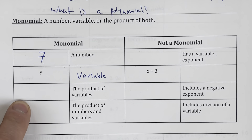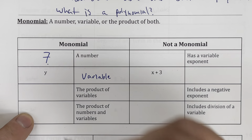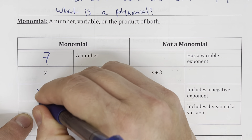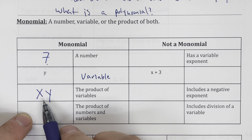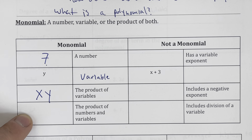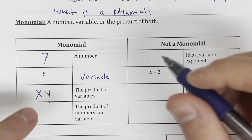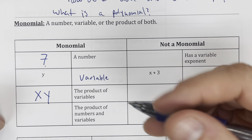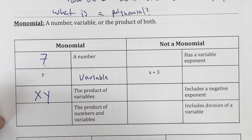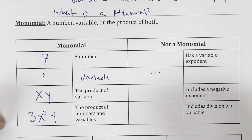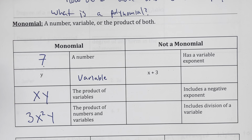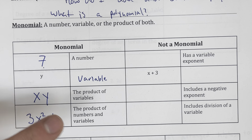Another example of a monomial is the product of variables. So something like x times y — that is also a monomial. And the product of numbers and variables is also a monomial. So something along the lines of 3x squared y — that would also be a monomial. It's just one term; we're multiplying a number and variables.